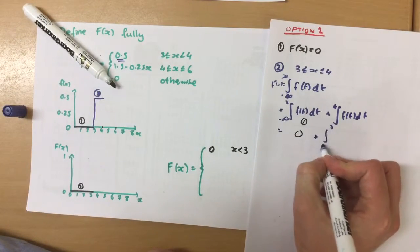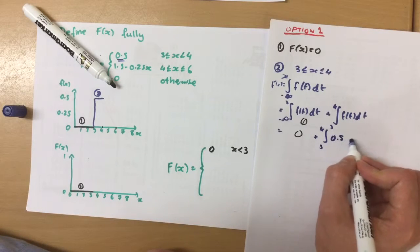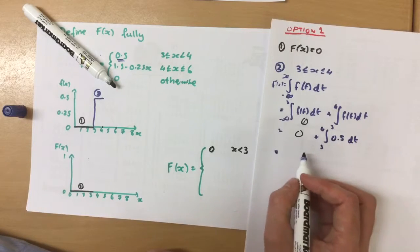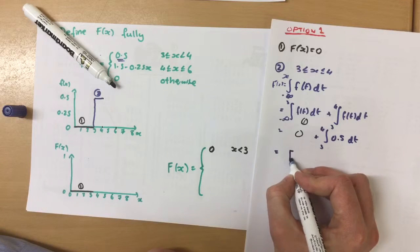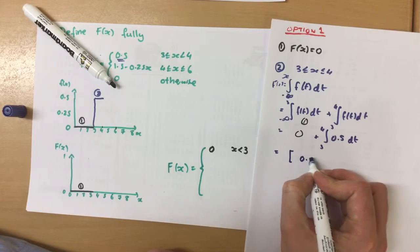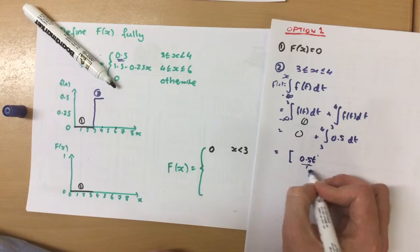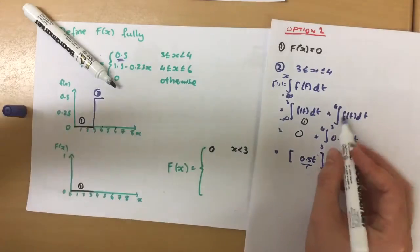And between 3 and 4, we're using 0.5. So we integrate this, get 0 still. 0 plus, so increase the power by 1, which gives us t to the power of 1. Divide by 1.